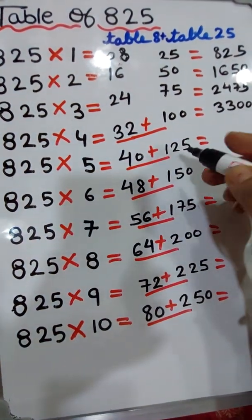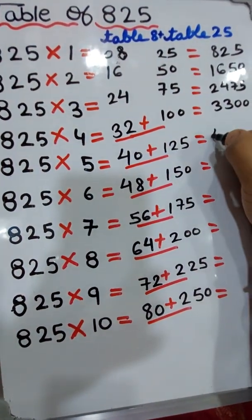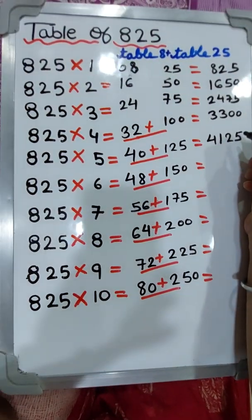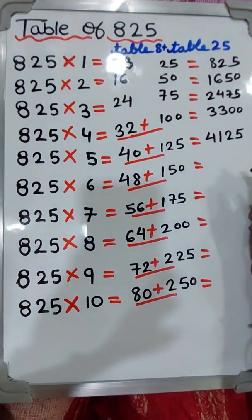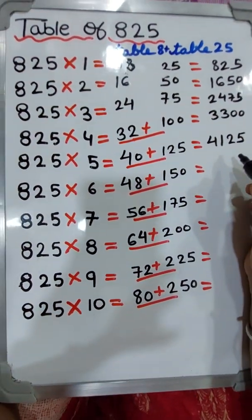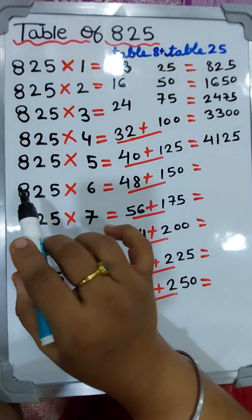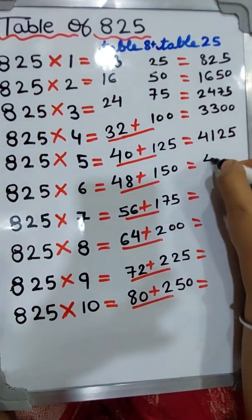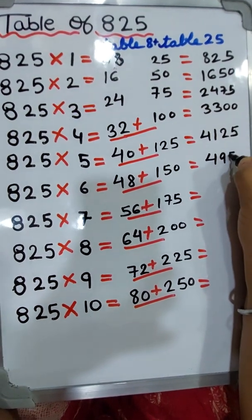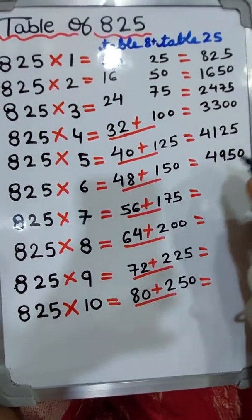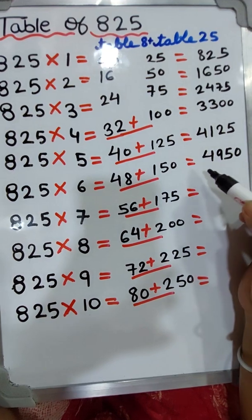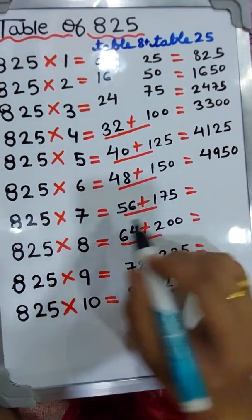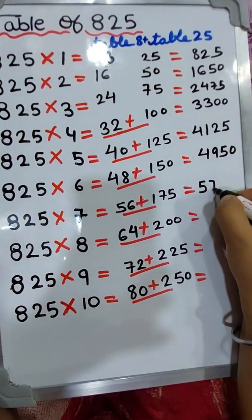825 fours are three thousand three hundred. 825 fives are four thousand one hundred and twenty-five. 825 sixes are four thousand nine hundred and fifty.